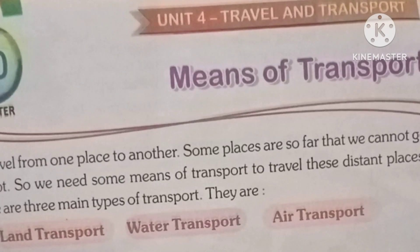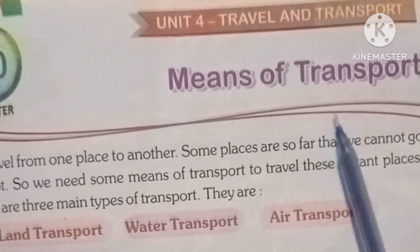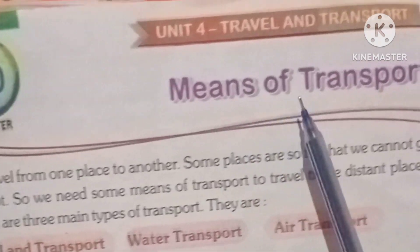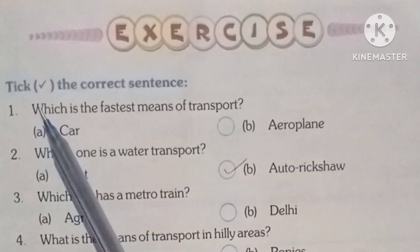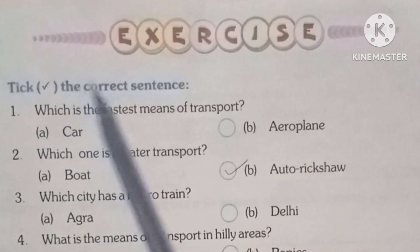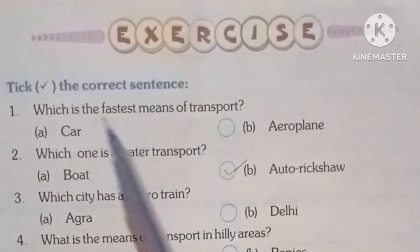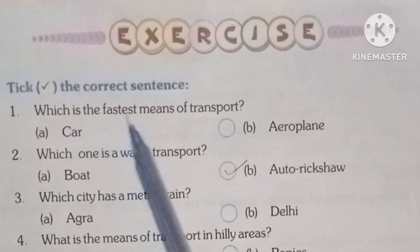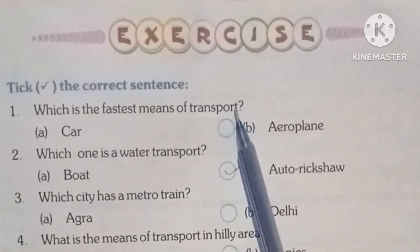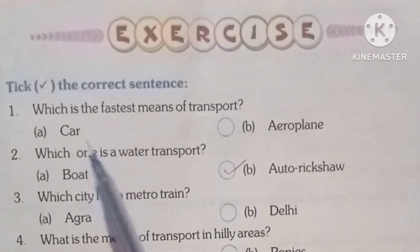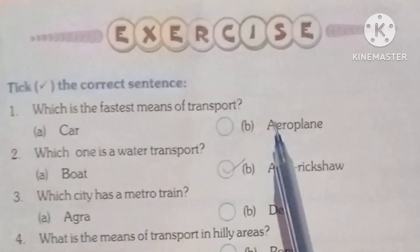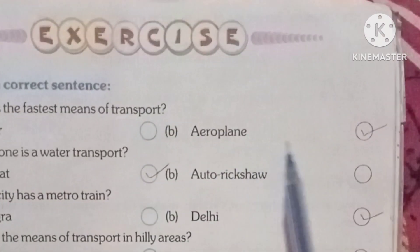We are going to discuss exercises on means of transport. Take the correct sentence. First, which is the fastest means of transport? The answer is aeroplane.